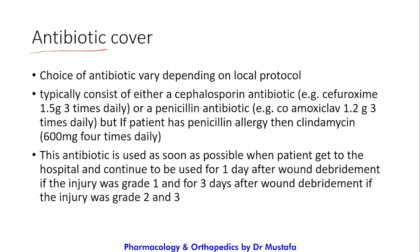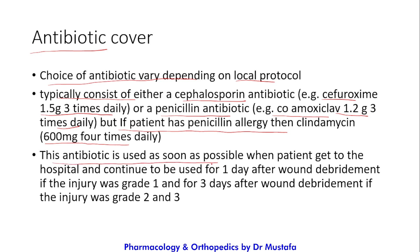Open fractures are associated with a high risk of infection, so antibiotic cover is very important. The choice of antibiotic varies depending on local protocol, but typically consists of either a cephalosporin — for example cefuroxime 1.5 grams three times daily — or a penicillin antibiotic, for example co-amoxiclav 1.2 grams three times daily. If the patient has a penicillin allergy, then clindamycin 600 milligrams four times daily is used. This antibiotic cover should be given as soon as possible when the patient arrives, and in some systems it is given in the ambulance before arrival.